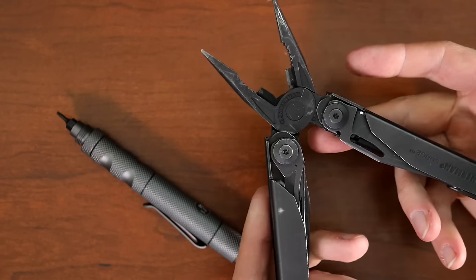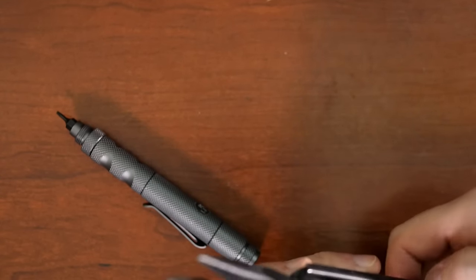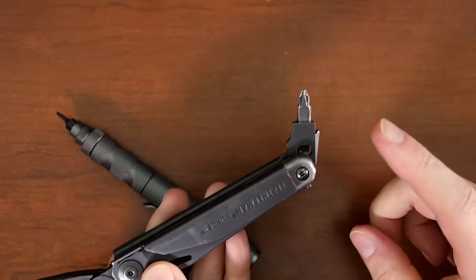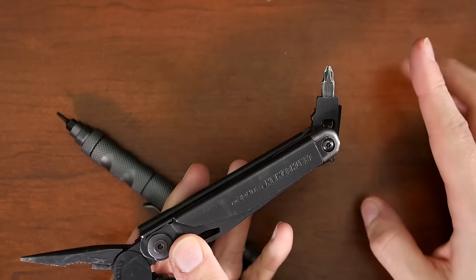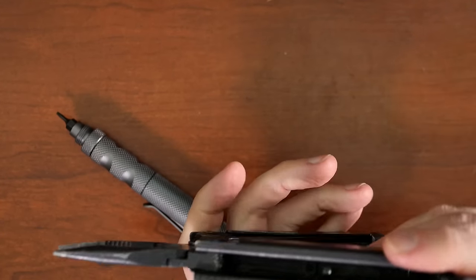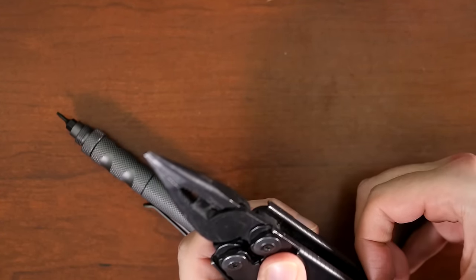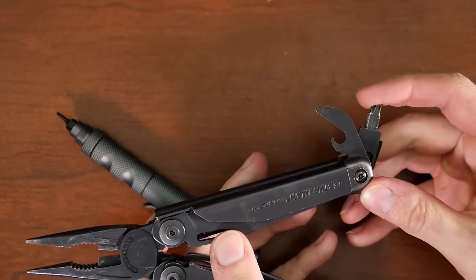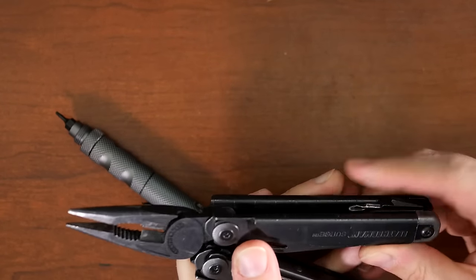You get pliers. You get wire cutters. And you get also a bit holder. Granted, this does not come with a bit kit. You have to buy that separately. That's always something that bothered me a little bit about it. Especially since a bit kit is kind of expensive.